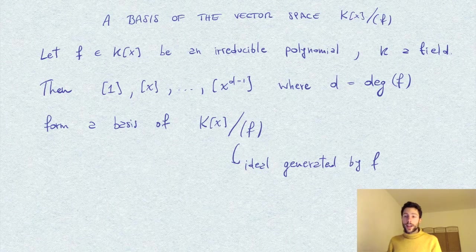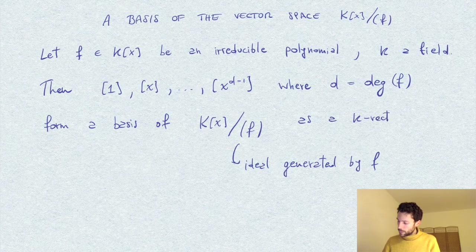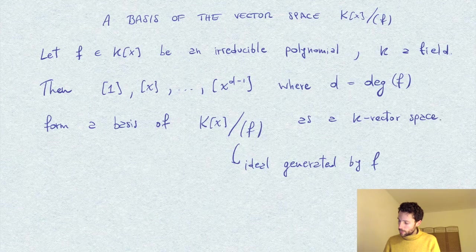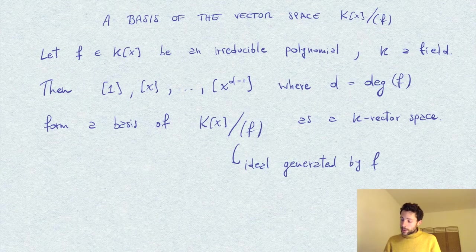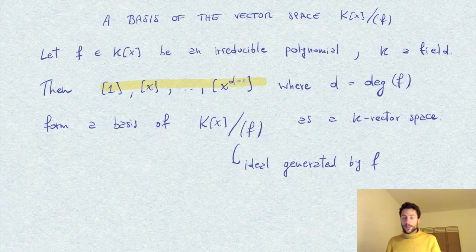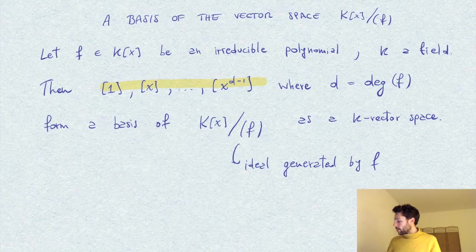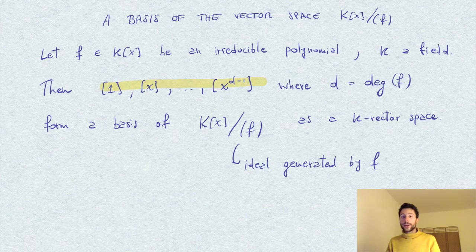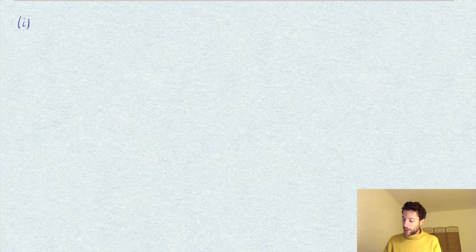Of course, I mean a basis as a vector space over k. To prove that these elements form a basis, we have to prove that they are linearly independent and that they are a generating set. Let's start by proving that they generate all the elements.